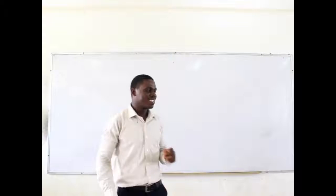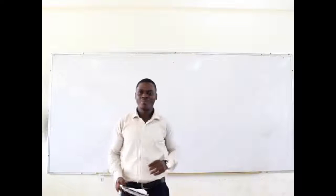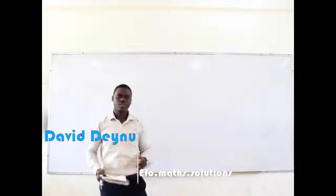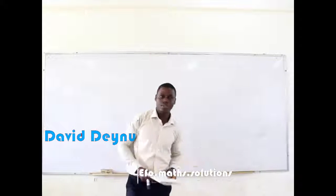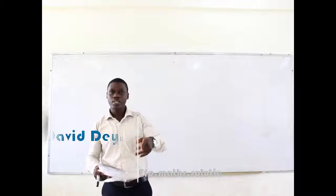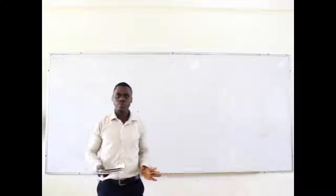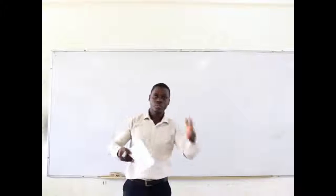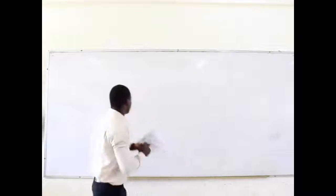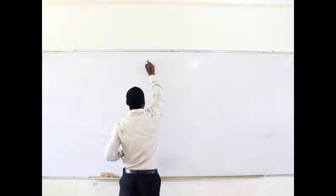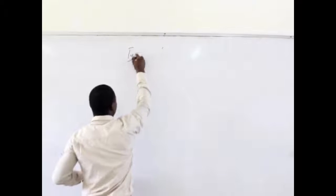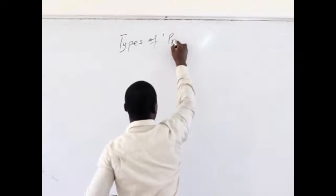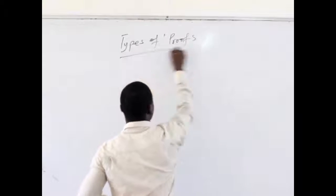Alright, welcome once again. In our previous lesson, we talked about setting axioms as far as natural numbers are concerned. In today's lesson, we want to look at types of groups as far as numbers are concerned. We'll be looking at doing a lot of groups, so we'll look at types of groups.